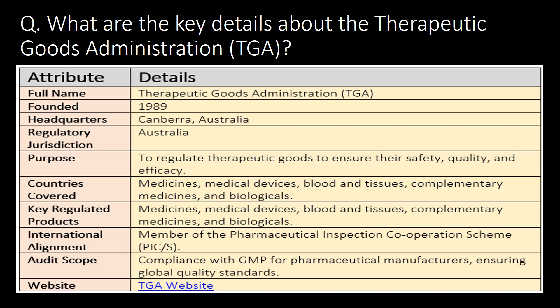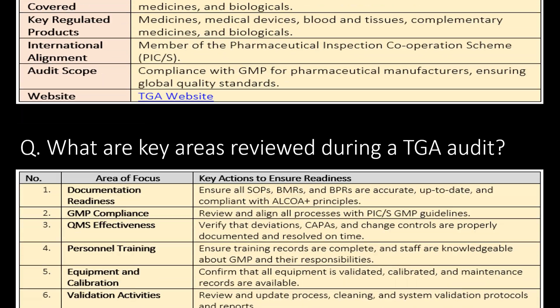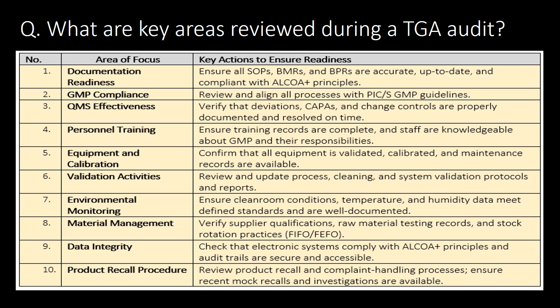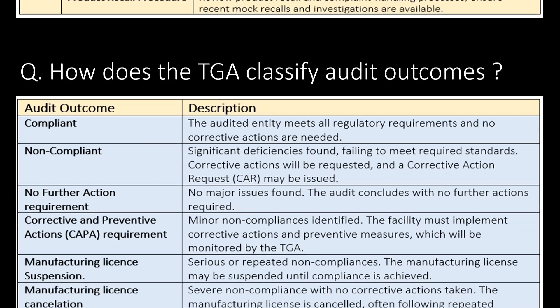What are the key areas reviewed during a TGA audit? Here is the list of 10 key areas commonly reviewed: documentation readiness, GMP compliance, QMS effectiveness, personnel training, equipment and calibration, validation activities, environmental monitoring, material management, data integrity, and product recall procedures.